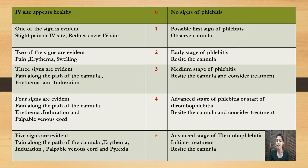The last score is 5. If all five signs are evident — pain along the path of the cannula, erythema, induration, palpable venous cord, and pyrexia — you give a score of 5. This indicates advanced stage of thrombophlebitis, so treatment needs to be started immediately and the cannula needs to be removed. Sometimes antibiotics may be started because this is the advanced stage of thrombophlebitis.